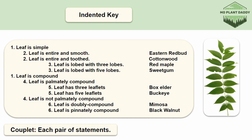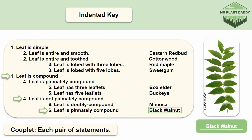Let's do one more indented key example before we move on to the bracketed key. If we look at couplet 1, is our leaf simple or compound? Our leaf is compound, so we will move on to couplet 4, which asks if our leaf is palmately compound or not. Our leaf is not palmately compound, meaning we move on to couplet 6, where we are asked if our leaf is doubly compound or pinnately compound. Our leaf is pinnately compound, so our leaf must be black walnut, otherwise known as Juglans nigra.